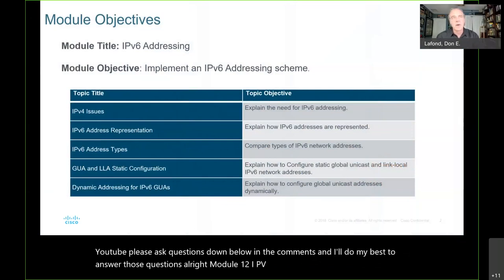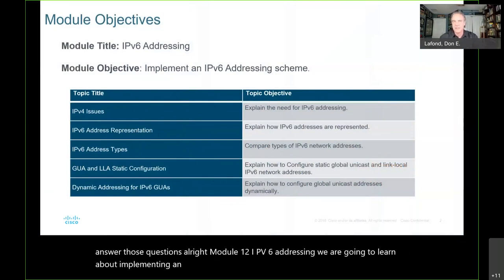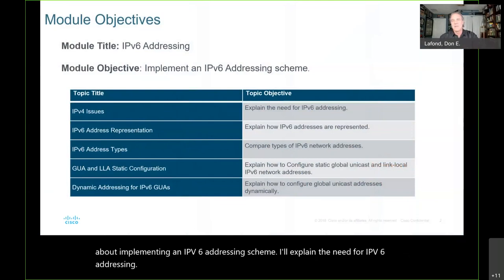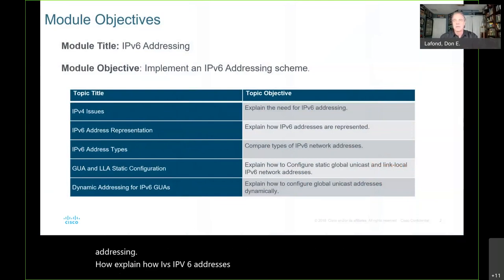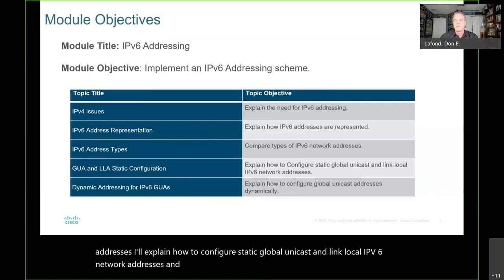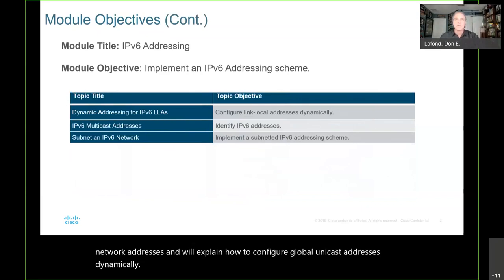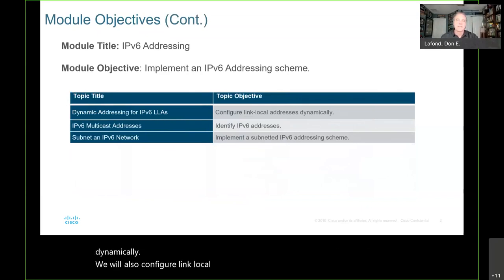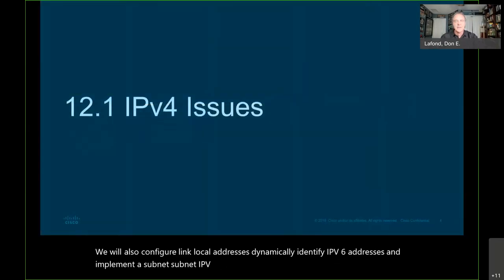We are going to learn about implementing an IPv6 addressing scheme. I'll explain the need for IPv6 addressing, explain how IPv6 addresses are represented, compare types of IPv6 network addresses, explain how to configure static global unicast and link local IPv6 network addresses, and explain how to configure global unicast addresses dynamically. We will also configure link local addresses dynamically, identify IPv6 addresses, and implement a subnetted IPv6 addressing scheme. We've got lots to do, but it's not too complex.